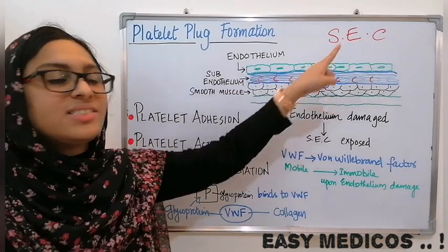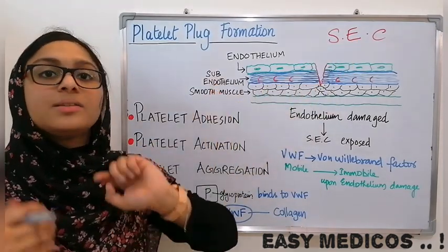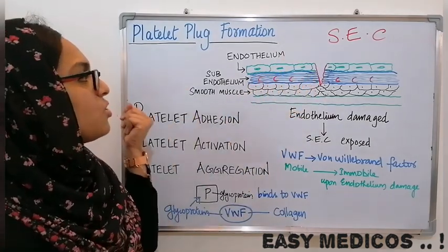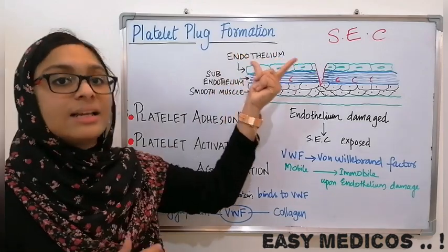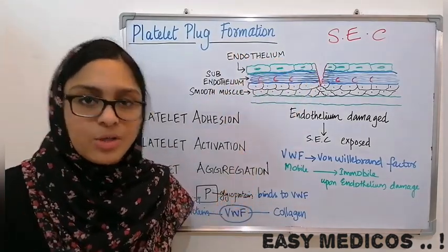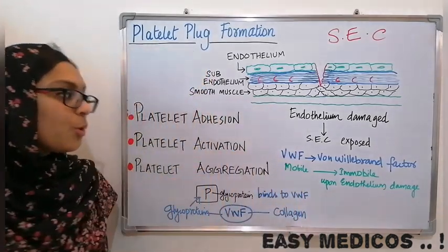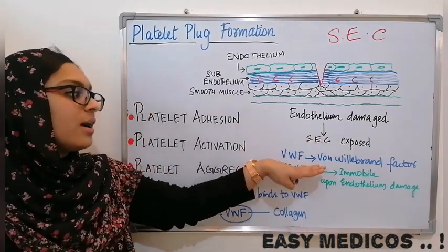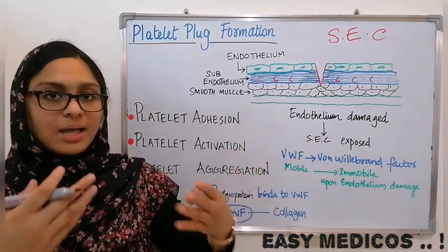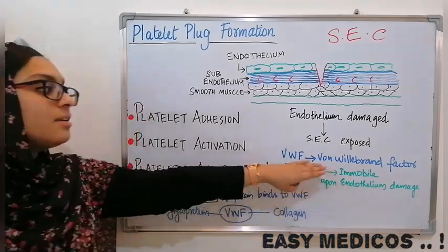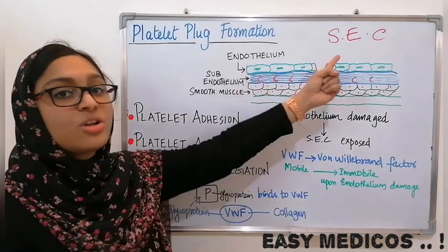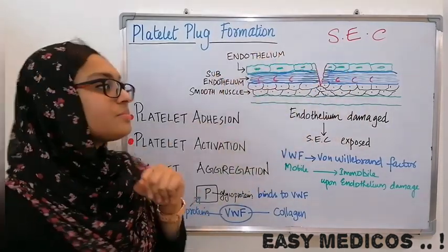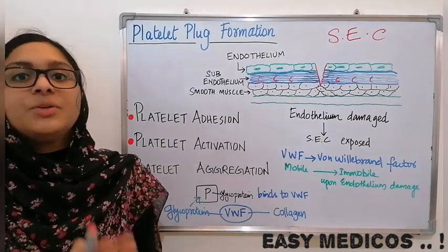The sub-endothelial collagen is present in this layer. Upon this damage of endothelium, the sub-endothelial collagen gets exposed. Upon this exposure, the endothelium releases von Willebrand factor (VWF), which is a mobile protein that becomes immobile upon endothelium damage. The glycoprotein on the platelets will go and bind to the VWF.